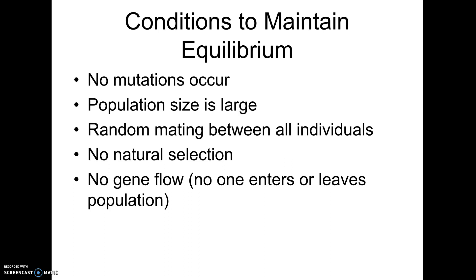There are five conditions necessary for a population to maintain Hardy-Weinberg equilibrium. The first is that there can't be any mutations. If we're looking at a population of mice that can have either black eyes or red eyes, and a mutation happens that causes more mice to suddenly have red eyes, that's obviously going to change the gene frequencies. Second, the population size needs to be large. Smaller populations tend to have less variation and are more subject to something called genetic drift.